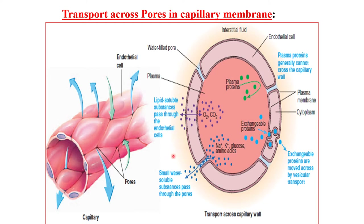Small water-soluble substances such as glucose and urea can come out of or enter the capillary through the water-filled pores. Plasma proteins, however, are too large — although water-soluble, they cannot go through these water-soluble pores and are retained inside the capillary.